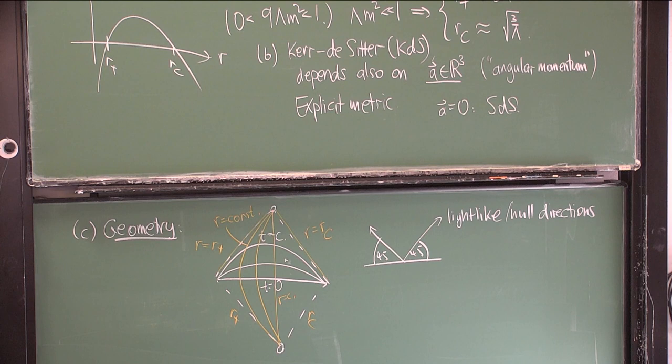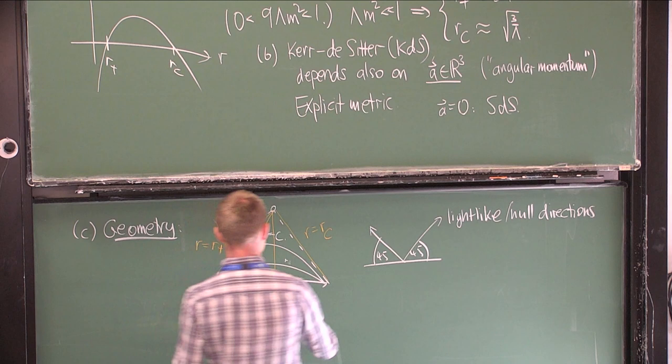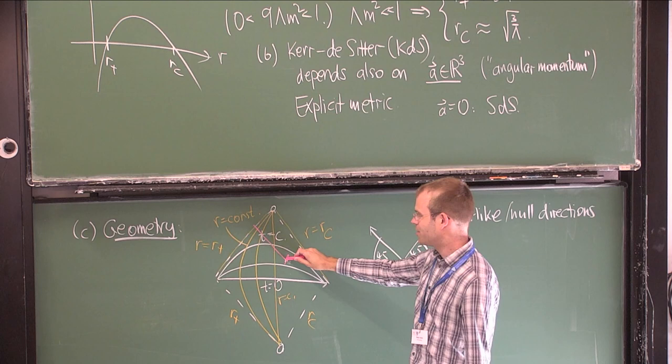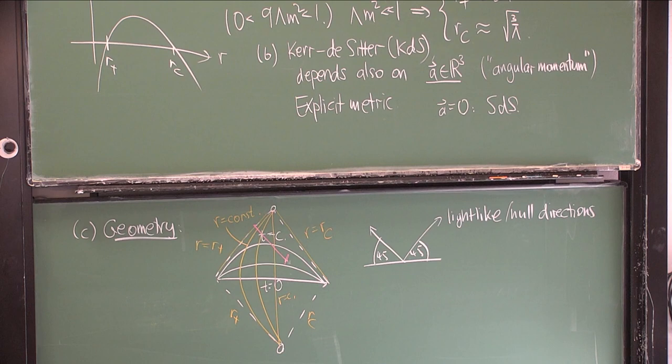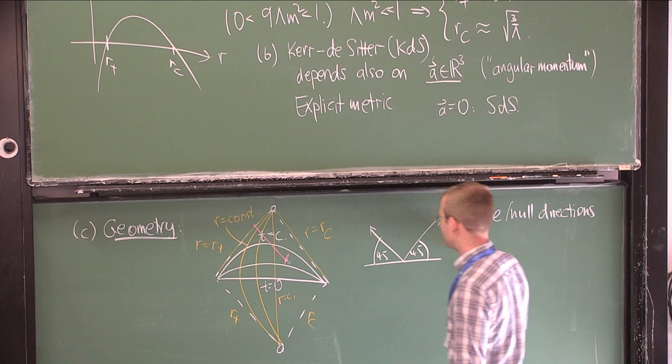If you start out here and move in this direction, you encounter R = R+ in finite parameter time along the geodesic. This place where the manifold was cut off at R = R+ — where the metric ceases to be smooth — is actually just a coordinate singularity. You can pass to a better coordinate system that doesn't become singular along that boundary.